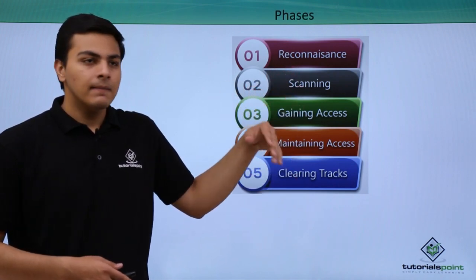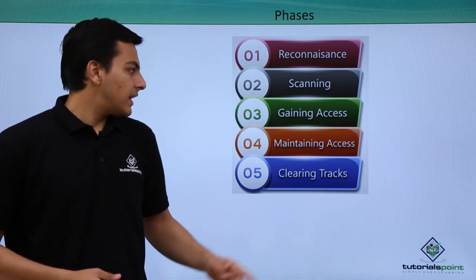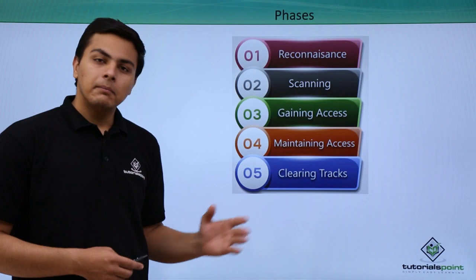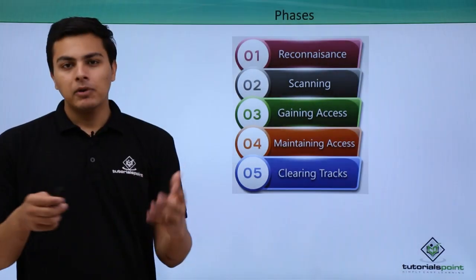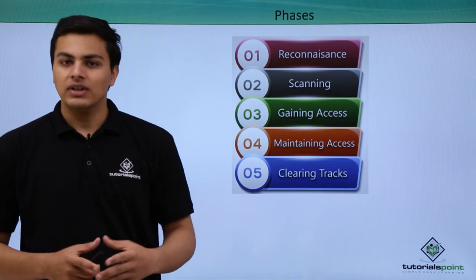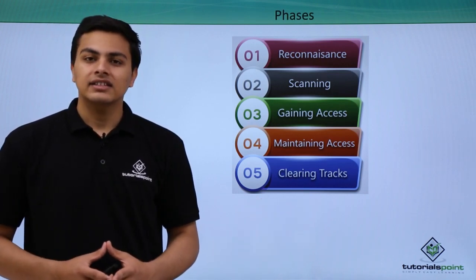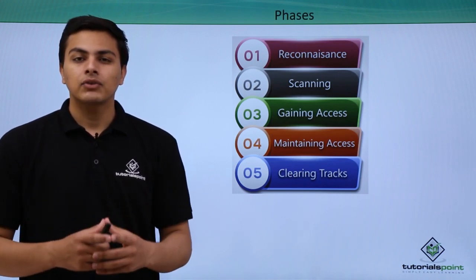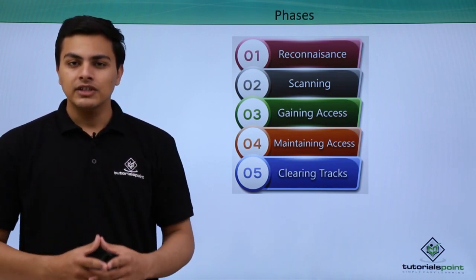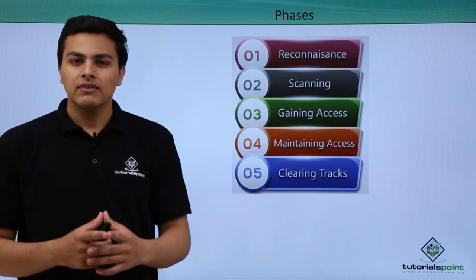To summarize, these are the five phases: reconnaissance, where we find information; scanning, where we find vulnerabilities; gaining access, where we exploit the system; maintaining access, where we upload a web shell or create a backdoor; and clearing tracks, where we remove our records. These are the five phases one has to follow to perform a successful hack. Thanks for watching.